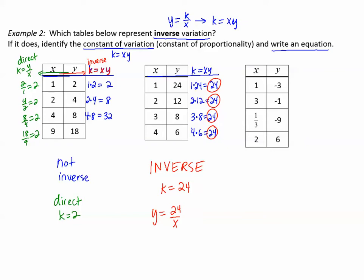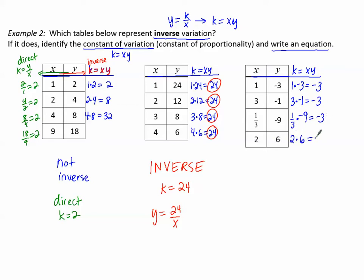Last table: checking k equals x times y. One times negative three is negative three, three times negative one is negative three, one-third times negative nine is negative three — so far so good. But two times six is twelve, which is not negative three. So this one is not inverse variation.